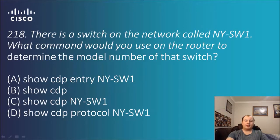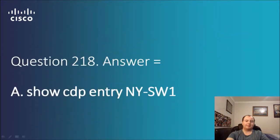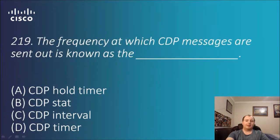Question 2.18: there is a switch on the network called New York Switch 1. What command would you use on the router to determine the model number of that switch? Options include show CDP entry New York Switch 1, show CDP, show CDP with the name, and show CDP protocol NYSW1. In this instance it's another command to rote-learn — the answer is show CDP entry.